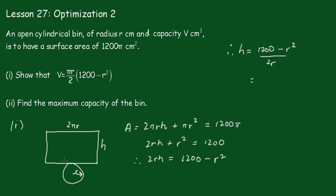Now the volume of the cylinder is equal to πr squared h. So this will be πr squared times 1200 minus r squared all over 2r. And we can see by putting that 2r at the front that we get πr over 2 into 1200 minus r squared. And that's what was required.